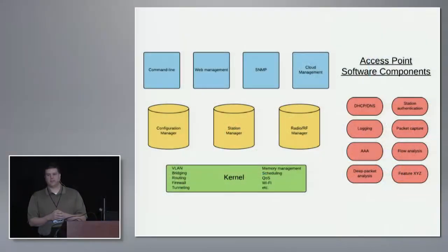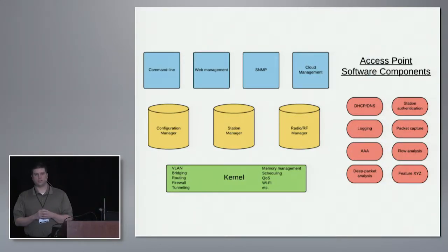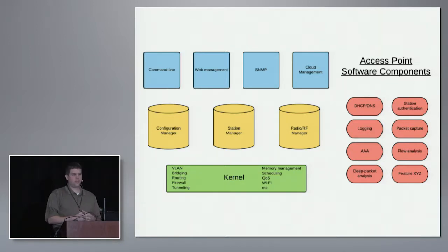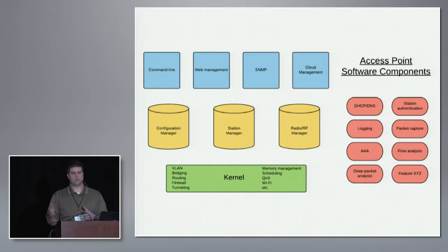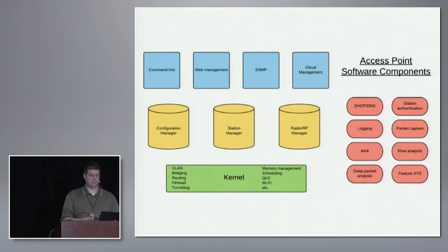Ten minutes isn't a whole lot of time, but it'll show you roughly how we make the sausage in the software factory. The components here in red and green — the green is the kernel, and the red are basically open source components available for anybody to download and use. Those are the components that anybody could use to build software for an access point. If your access point is built on VXworks or some other commercial system, then you've got what they have. But if you're using open source software, there's just a ton available.